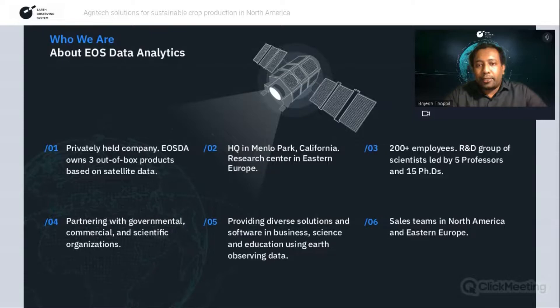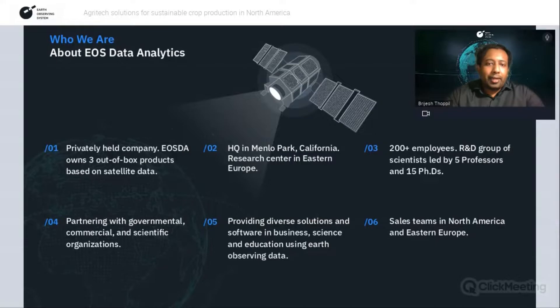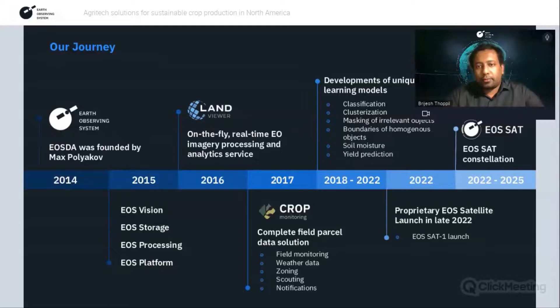EOS Data Analytics is a privately held company with headquarters at Menlo Park in California. Our main products are web-based platforms based on satellite data. At present, we have more than 200 employees located in the US and different locations in Eastern Europe. Our R&D efforts are backed by a group of 15 scientists. Our core expertise is in agriculture and forestry, enabling us to partner with business entities, government institutions, and scientific organizations to meet their business, educational, and research needs.